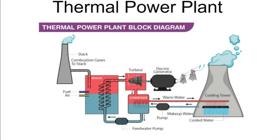Before discussing advantages, let's identify other types of power plants: hydro power plant, nuclear power plant, diesel power plant, gas turbine power plant, and non-conventional sources like solar, wind, biomass, methanol, tidal, and hybrid power stations. Now comparing these, we can decide whether to install a thermal power plant and what its advantages are.